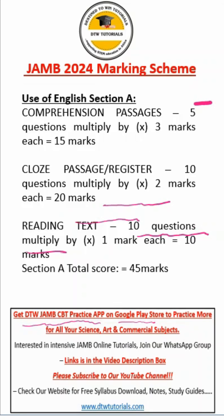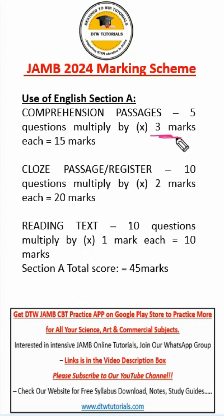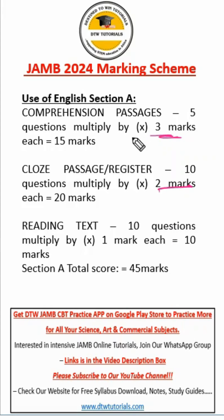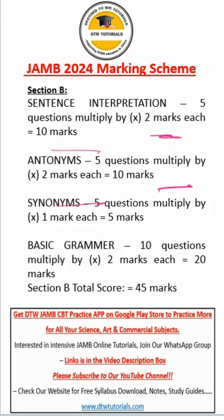What is the mark for English? For the comprehension passages, it carries three marks — it's very heavy. So please make sure you learn how to answer comprehension, because once you're losing it, you're losing a very high mark. For your registers, each of the questions carries two marks. You get five comprehension questions — three times five gives you 15. Registers give you 20. Then your reading texts, each carries one mark. This is Section A.